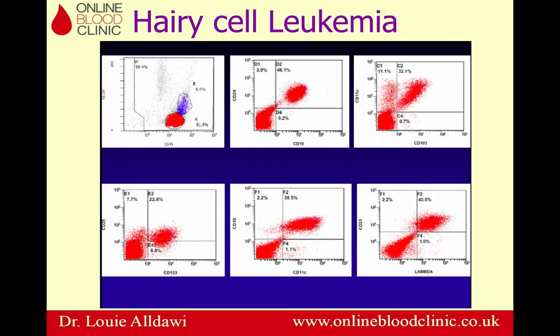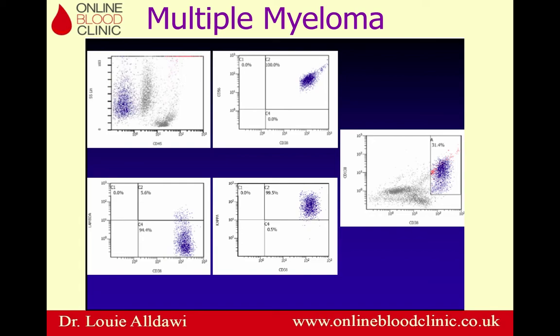To diagnose hairy cell leukemia using flow cytometry, the first slide (top left) shows the CD45-low population of interest. After gating, further analysis shows the cells are CD19 positive, CD20 positive, CD11c positive, CD103 positive, CD25 positive — and they are lambda restricted, which is very characteristic of hairy cell leukemia.